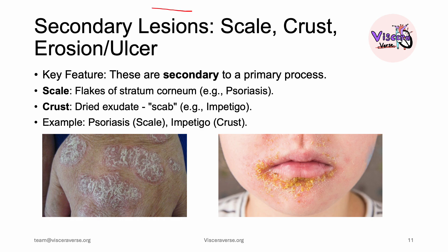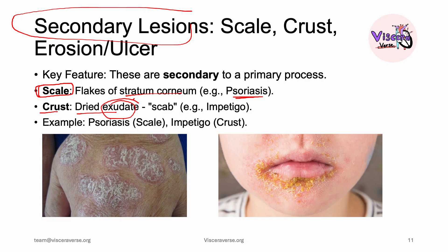Now we come to secondary lesions — the changes that happen over time to primary skin lesions. A scale is one such change: these are flakes of stratum corneum and are very typical in psoriasis, implying high cell turnover. A crust is a dried exudate — a weeping primary skin lesion accumulates dried exudate over time and forms a scab. This is very typical in impetigo.